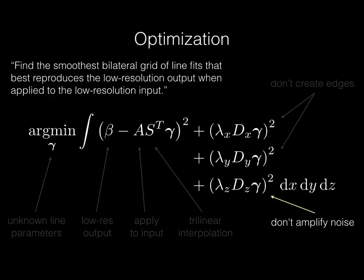This optimization is a linear least squares problem, and we can solve it using standard techniques. And while it produces good results, it is too slow in practice. Fortunately, we can decompose this global optimization into a collection of independent weighted least squares problems that can be solved efficiently in parallel.